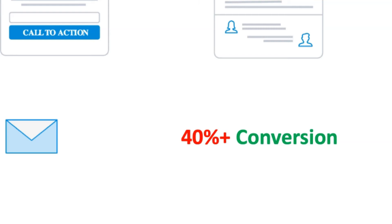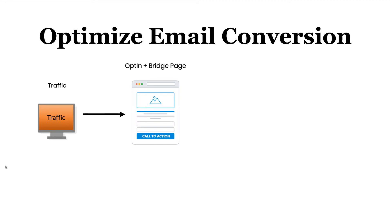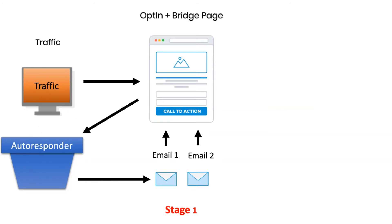These pre-written emails should get you at least 40% conversion if you do it correctly. Now let's talk about how to optimize email conversion. I'm going to cover three email stages. In stage one you should have two emails — and those first two emails should go to the opt-in page, not the sales page. I'll explain more about why shortly.